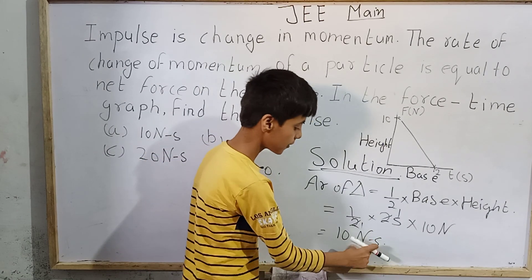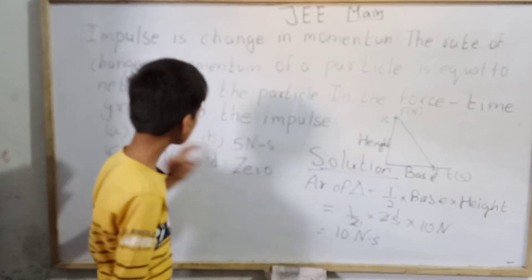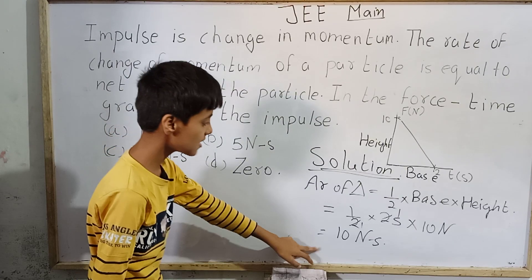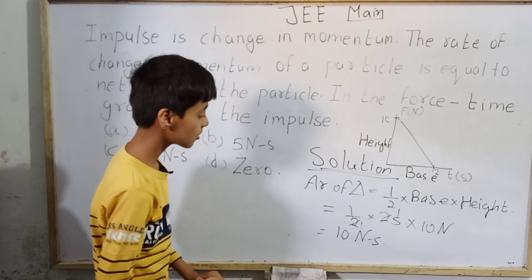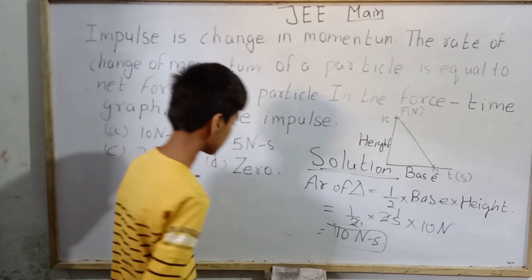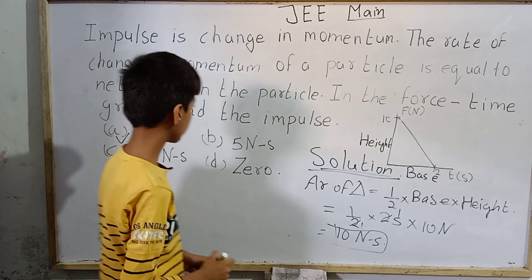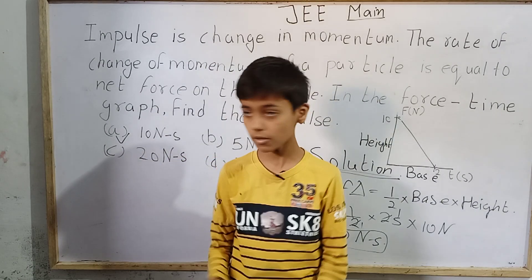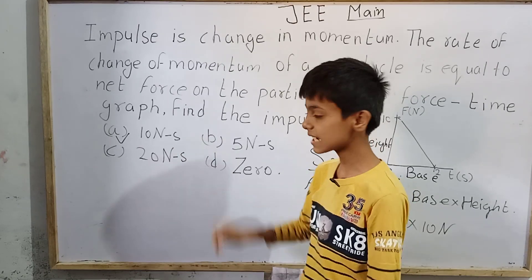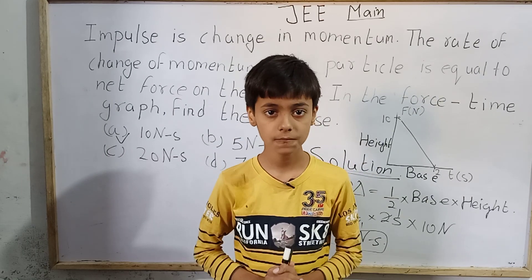The unit of impulse is also newton-seconds. Matching our solution with the options, option A is 10 newton-seconds, and we also found 10 newton-seconds. So the correct option is A — 10 newton-seconds. This was today's topic. Thank you.